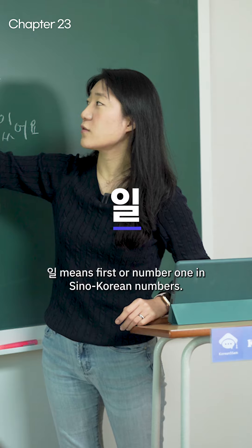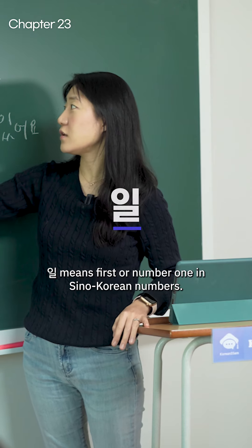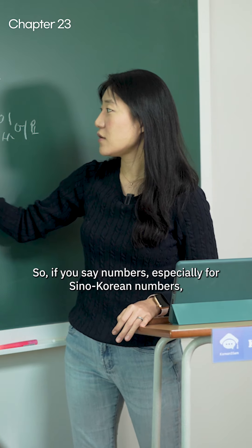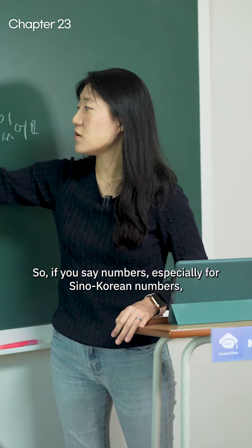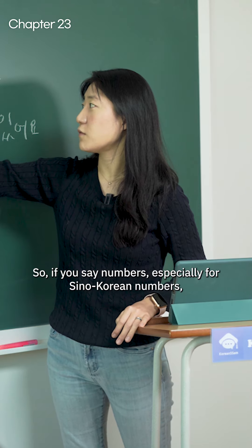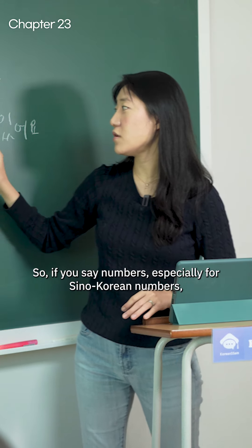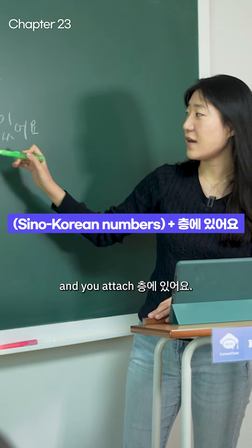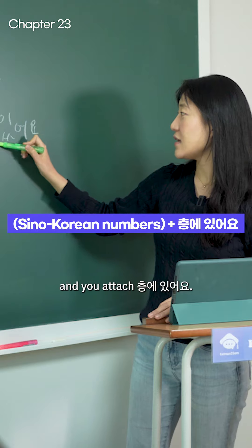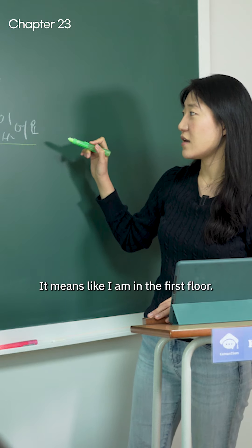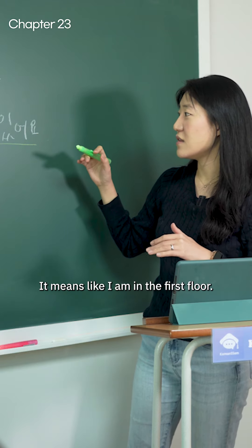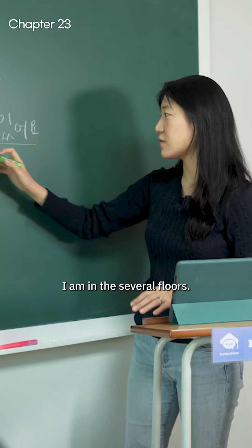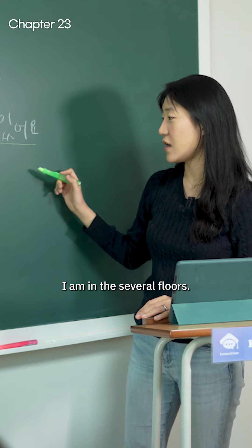일. 일 means first, or number one in Sino-Korean numbers. So if you say numbers — especially Sino-Korean numbers — and you attach 층에 있어요, it means like I'm on the first floor, or I am on several floors.